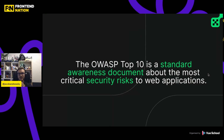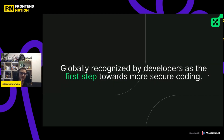OWASP Top 10 is a standard awareness document about the most critical security risks in modern web applications. I have highlighted the words 'standard awareness document' and 'security risks.' Apart from that, it is recognized as the first step towards more secure coding. So it doesn't mean that it will solve all your problems, but it is a solid first step if you are thinking about making your app more secure.